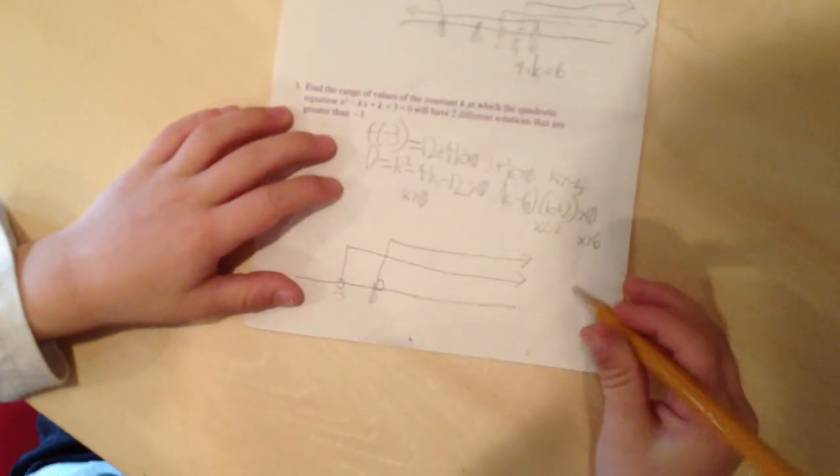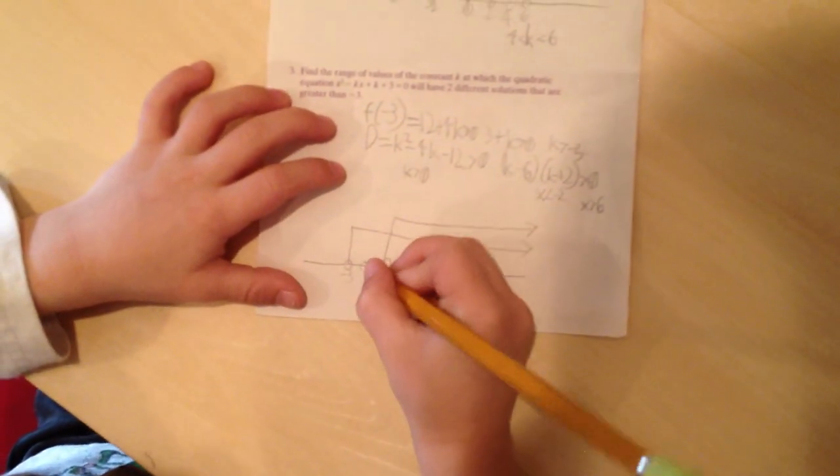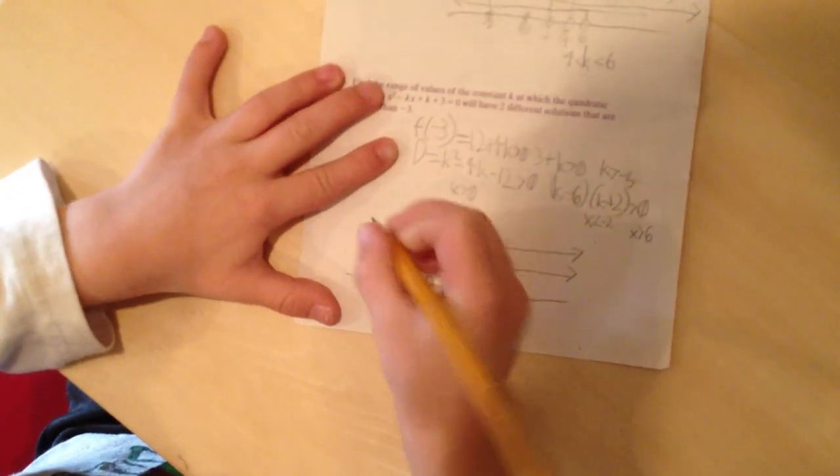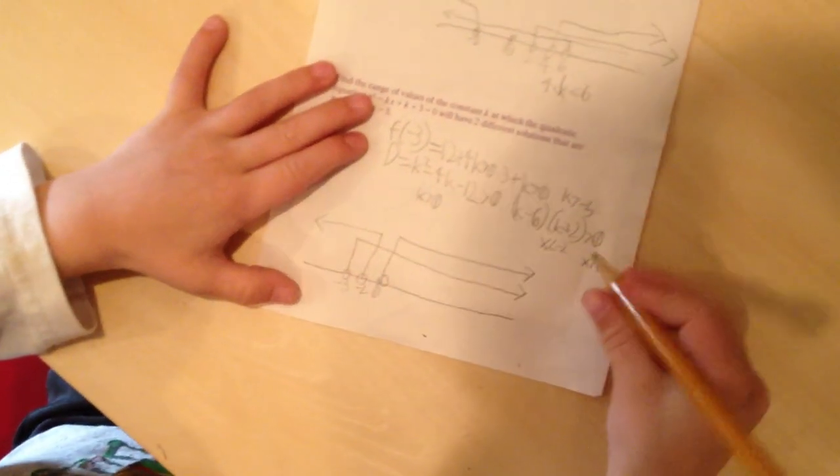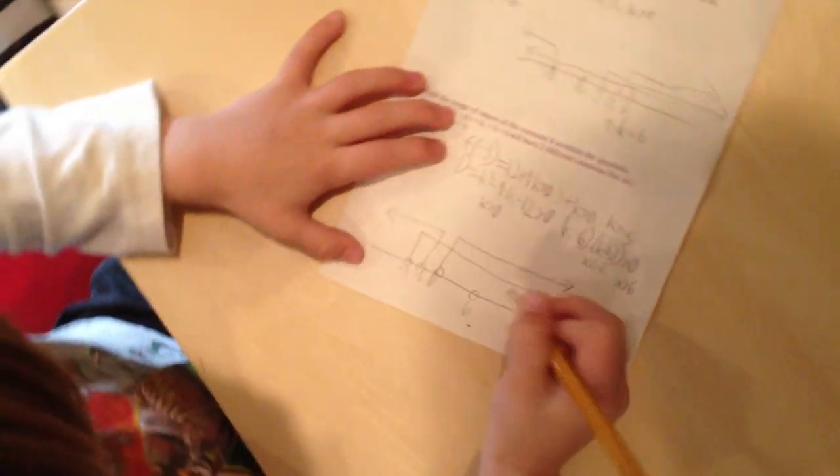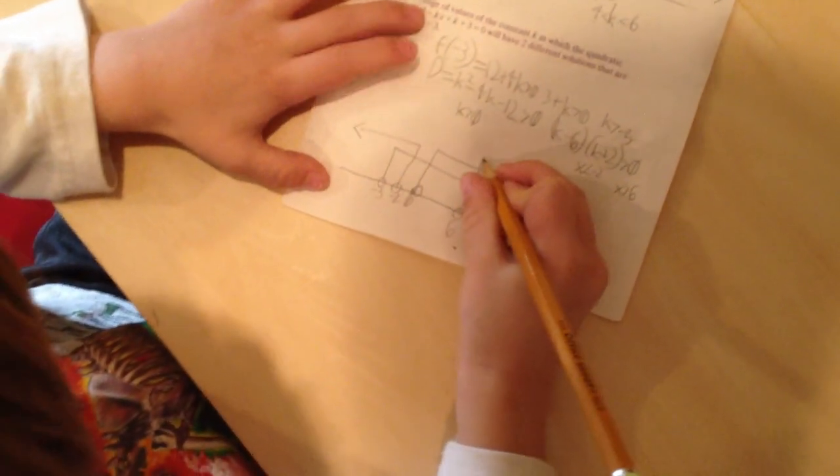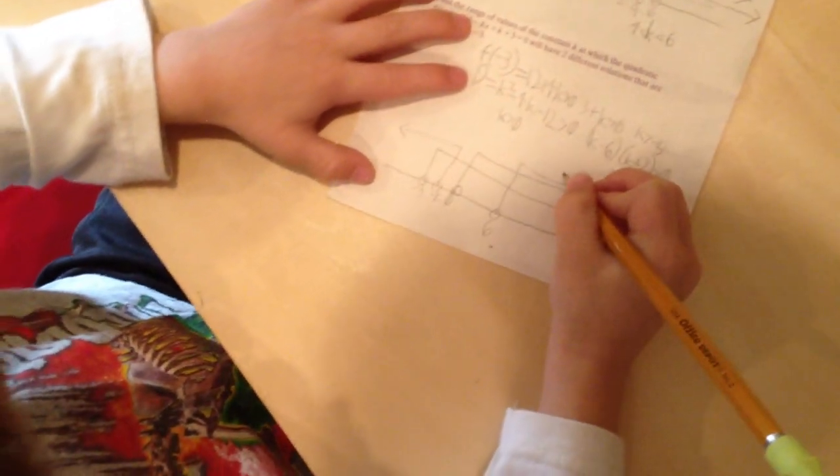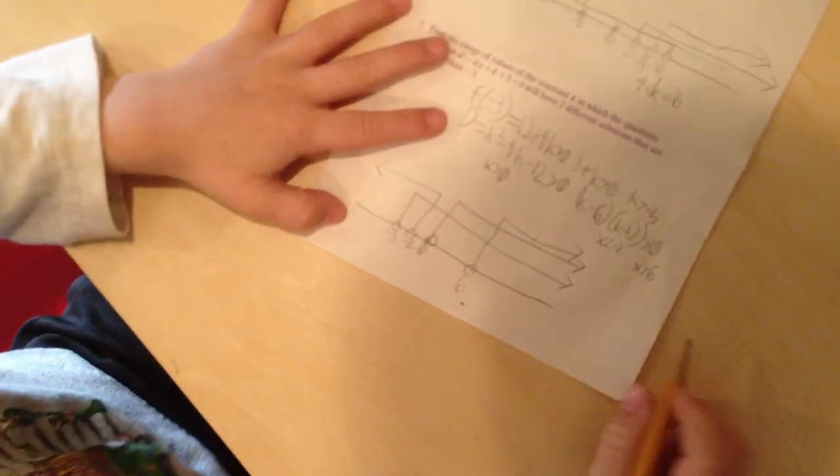And then k is less than negative 2, negative 2, and it goes that way. And then k is greater than 6, 6. And now we saw that there's 3 lines right there, and they're all greater than 6. So now k is greater than 6, and now we're done with the problem.